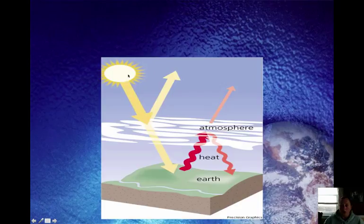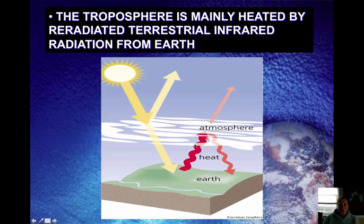This diagram here is showing the sunlight coming in, reflecting some off by the atmosphere, absorbing some in the ozone layer. What gets down to Earth is the visible light spectrum. It's absorbed and then re-radiated as infrared energy, which traps in this heat in the atmosphere by the greenhouse gases. So the troposphere, which is the first layer of Earth's atmosphere, is mainly heated by re-radiated terrestrial infrared radiation from Earth.